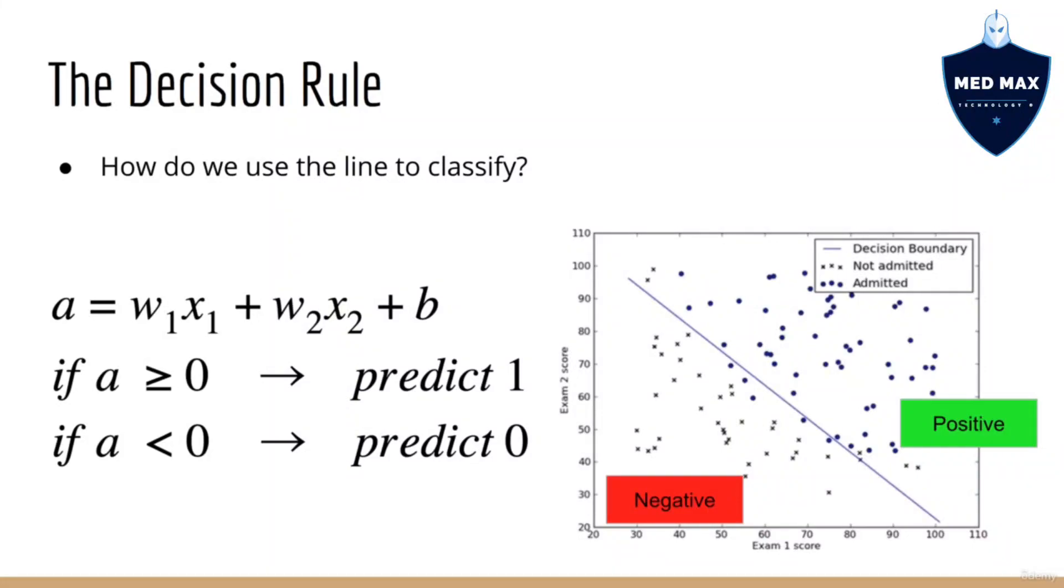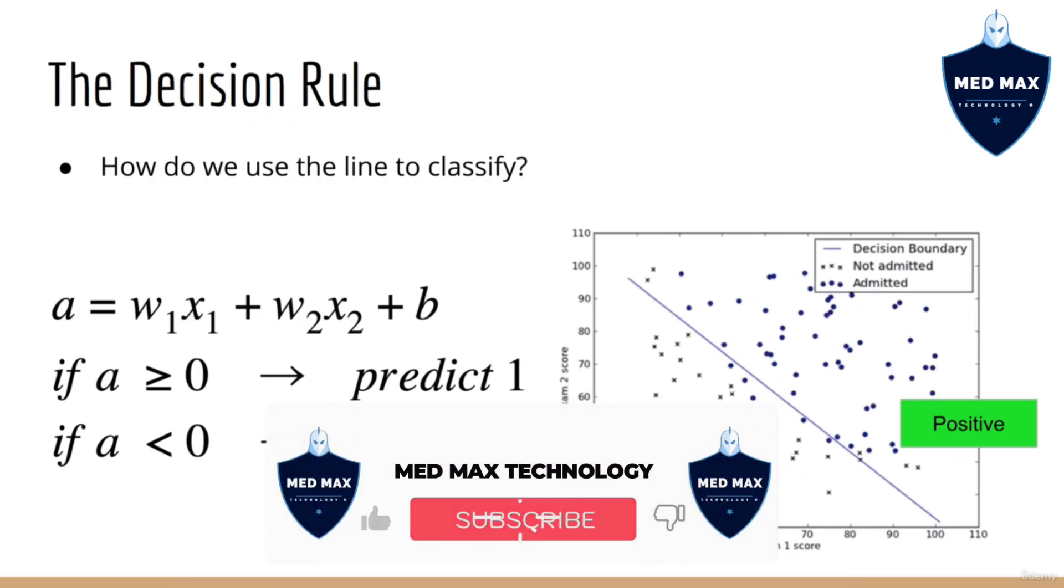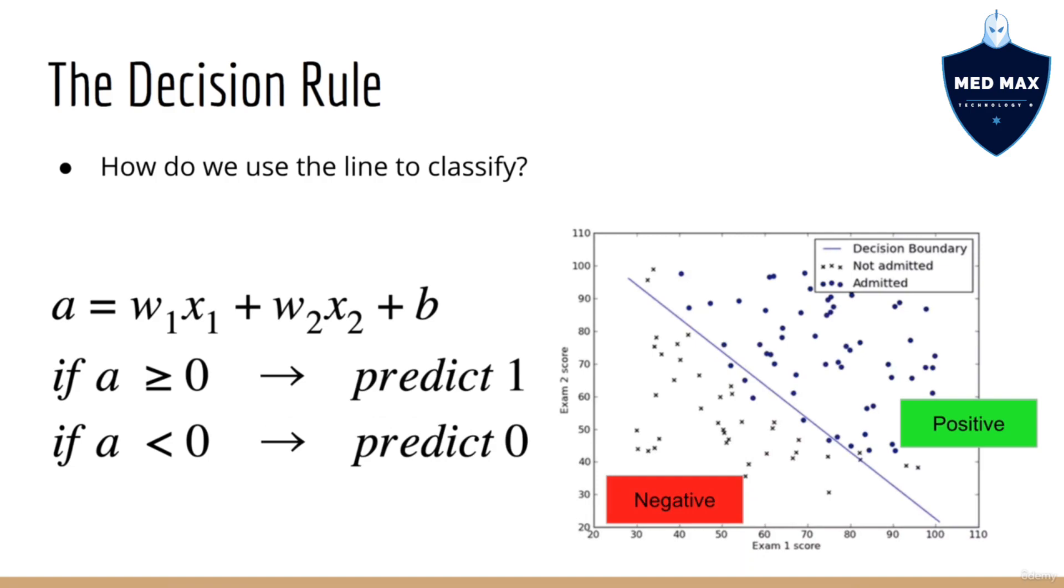The next question you might have is, how does this line help us make predictions? Luckily, due to the rules of geometry, if we plug in a data point x, which is not on a line, then either we will get a number bigger than 0 or less than 0. In fact, any data point on one side of the line will always give us a number bigger than 0. Any data point on the other side of the line will always give us a number less than 0. Using this, it's very easy to turn this into a prediction model. All we have to do is take in any data point x, which is a vector containing the elements x1 and x2, pass it into the expression for our line, w1*x1 plus w2*x2 plus b, and then check its sign. If the sign is positive, we predict 1. If it's negative, we predict 0.